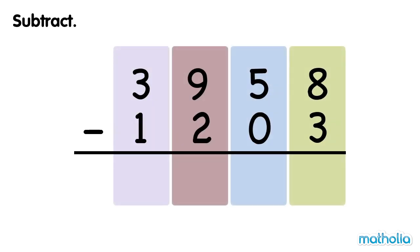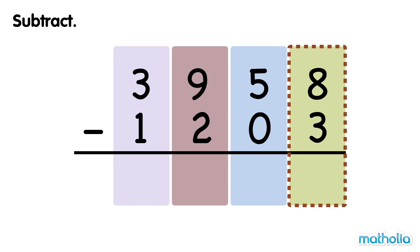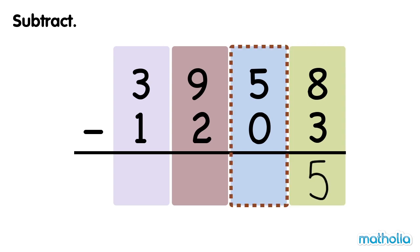Let's find 3,958 minus 1,203. Subtract the ones. 8 ones minus 3 ones equals 5 ones. Subtract the tens. 5 tens minus 0 tens equals 5 tens.